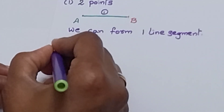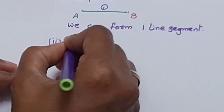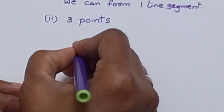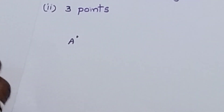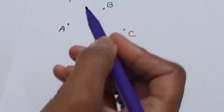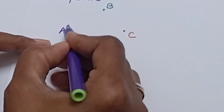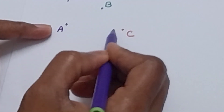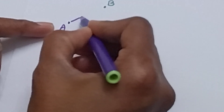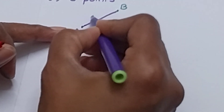Now we do the second problem: 3 points. We take 3 points — first point A, second point B, and third point C. We take point A and try to connect the remaining points. I am connecting A with B — this is one line segment.